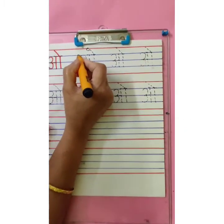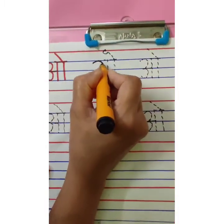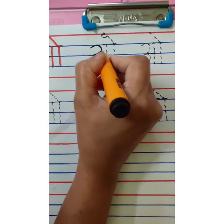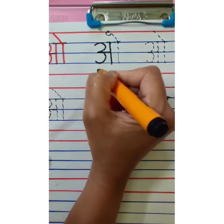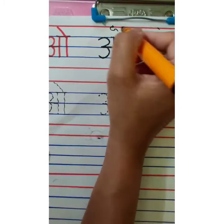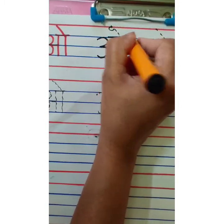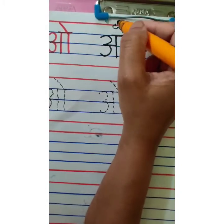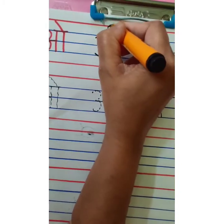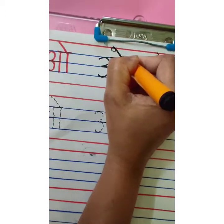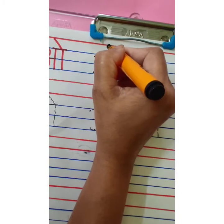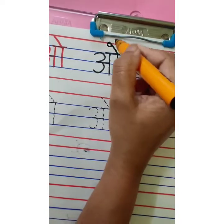Start with the first blue line. Write number 3, then a sleeping line, then a standing line — this is 'a'. One more standing line — this is 'a'. Then an overhead small sleeping line. Then give the matra — a slanting line, which is called matra. There is a small curve on this matra. This is O.